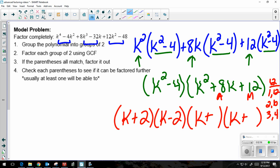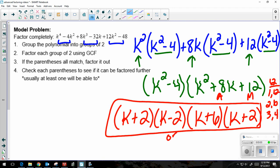So this is your final answer, or you may see this written as k plus 2 squared, k minus 2, k plus 6, because if you notice I have two parentheses that are k plus 2.